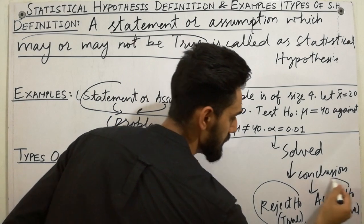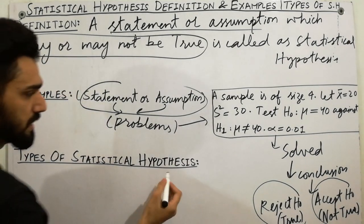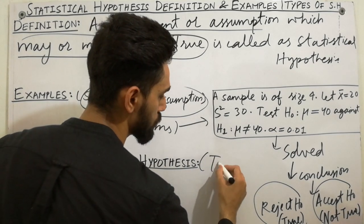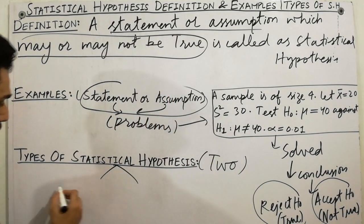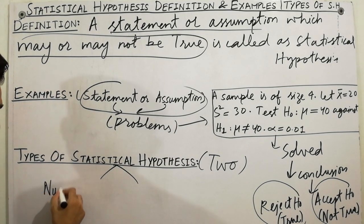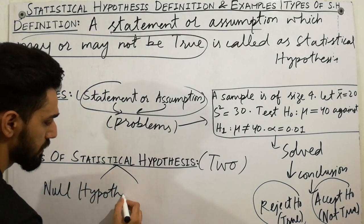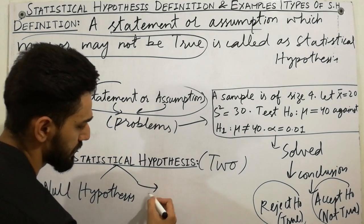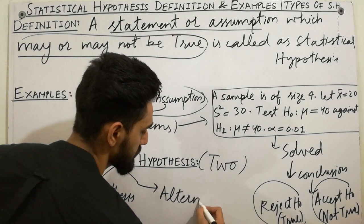That's called a statistical hypothesis. And last point: what are the types of statistical hypothesis? There are two types of statistical hypothesis: null hypothesis and alternative hypothesis.